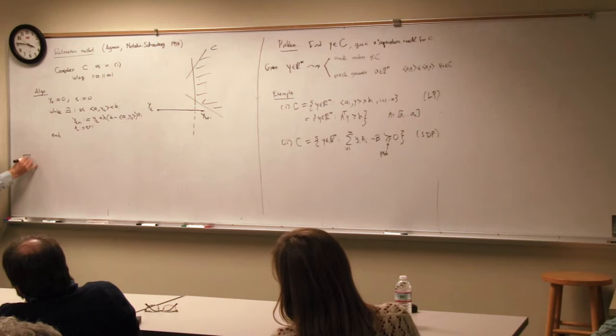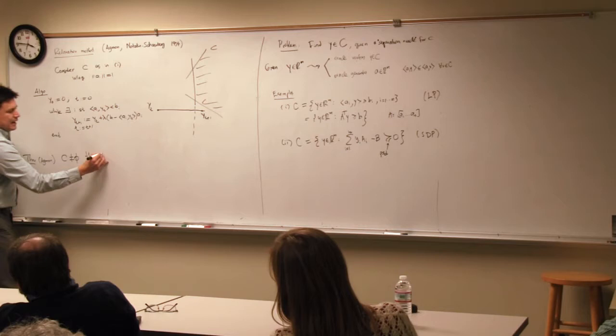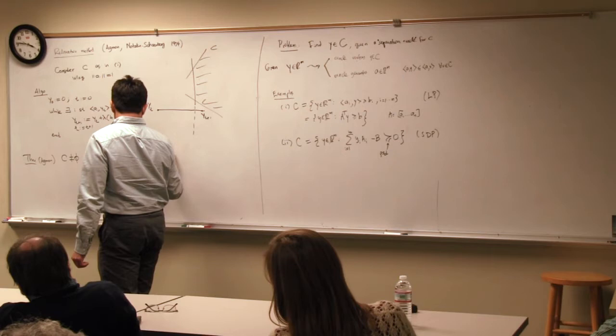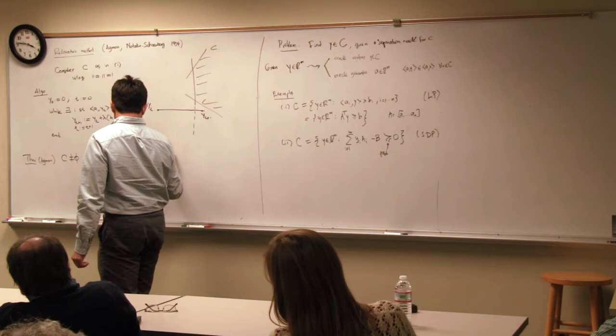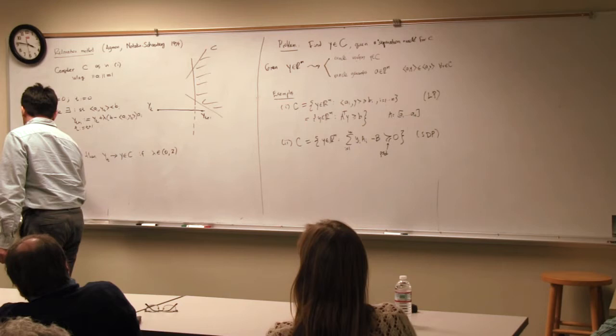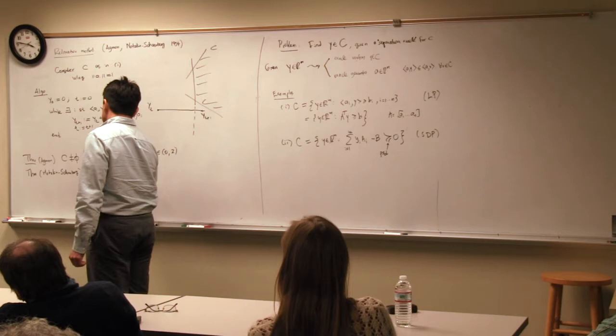Agmon proved that if C is non-empty, the algorithm generates a sequence that either terminates with a feasible point or converges to a point in C, for lambda between 0 and 2. A related statement by Motzkin and Schoenberg says that if the interior of C is non-empty, Y_T is in C for T sufficiently large.